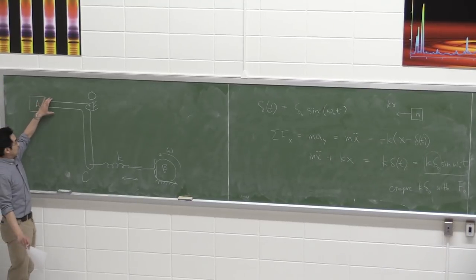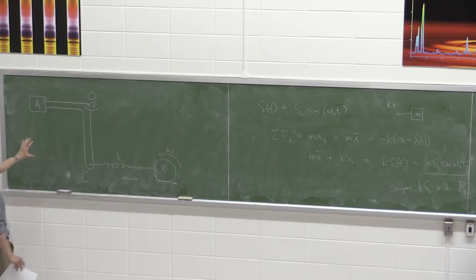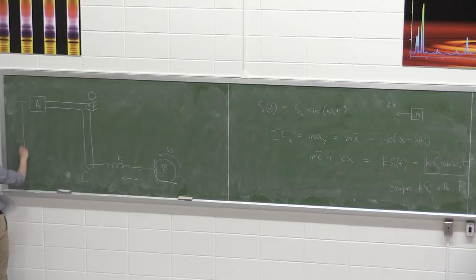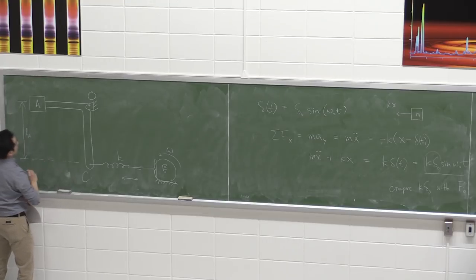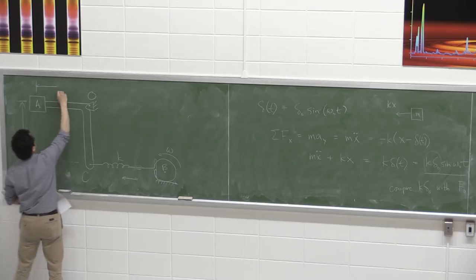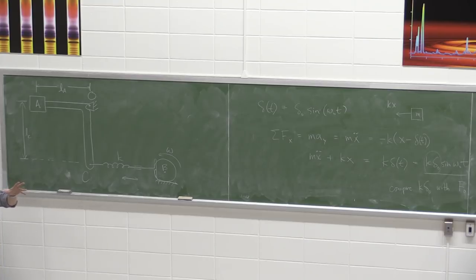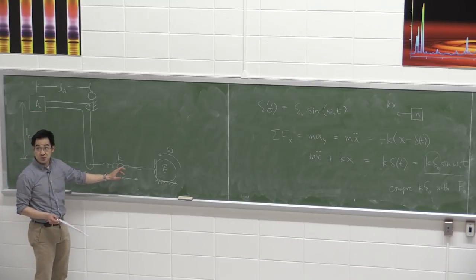We have an L-shaped bar that is negligible in mass — all the mass is concentrated in heavy block A. The L-shaped bracket has a height LA from the spring to mass A, and a length LC from point C to point O. The system is currently at equilibrium, neutral position, no displacement of A, with the spring already pre-stretched by an amount we can determine.